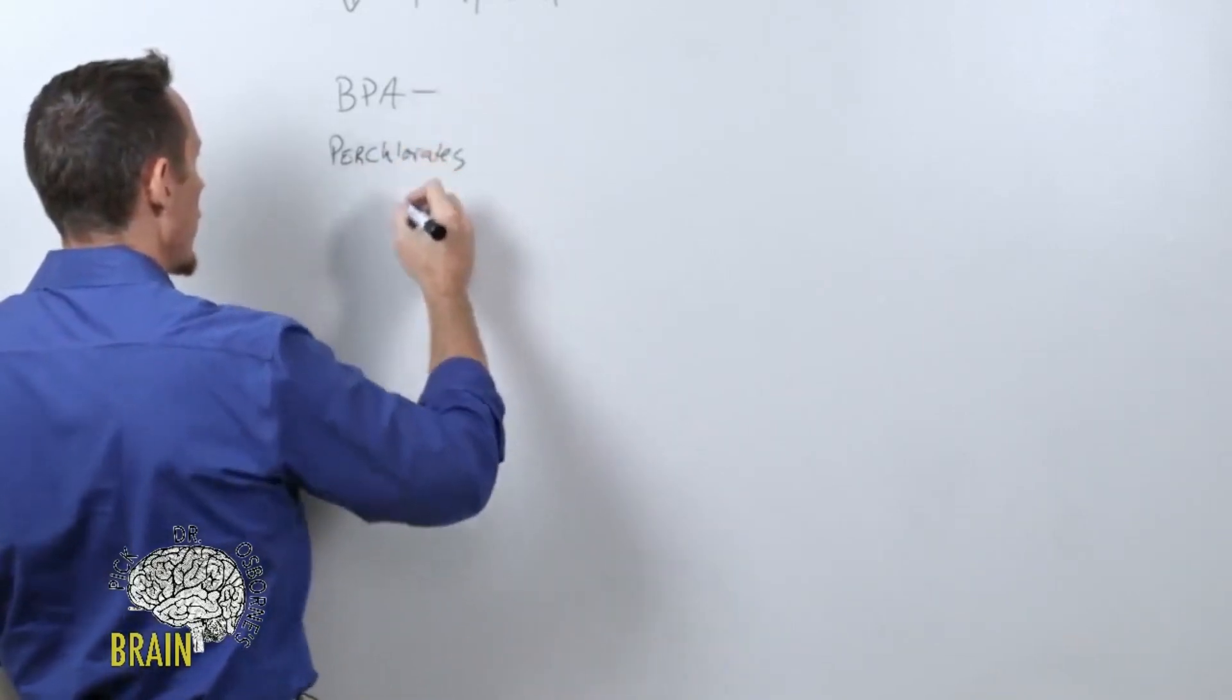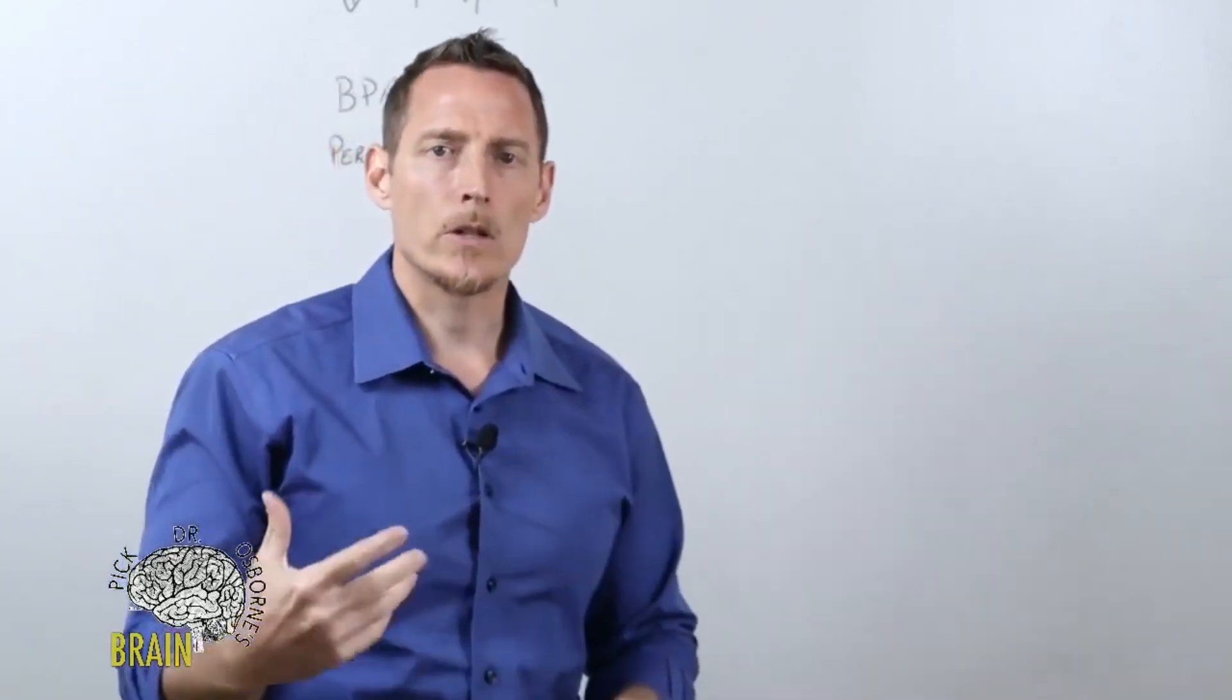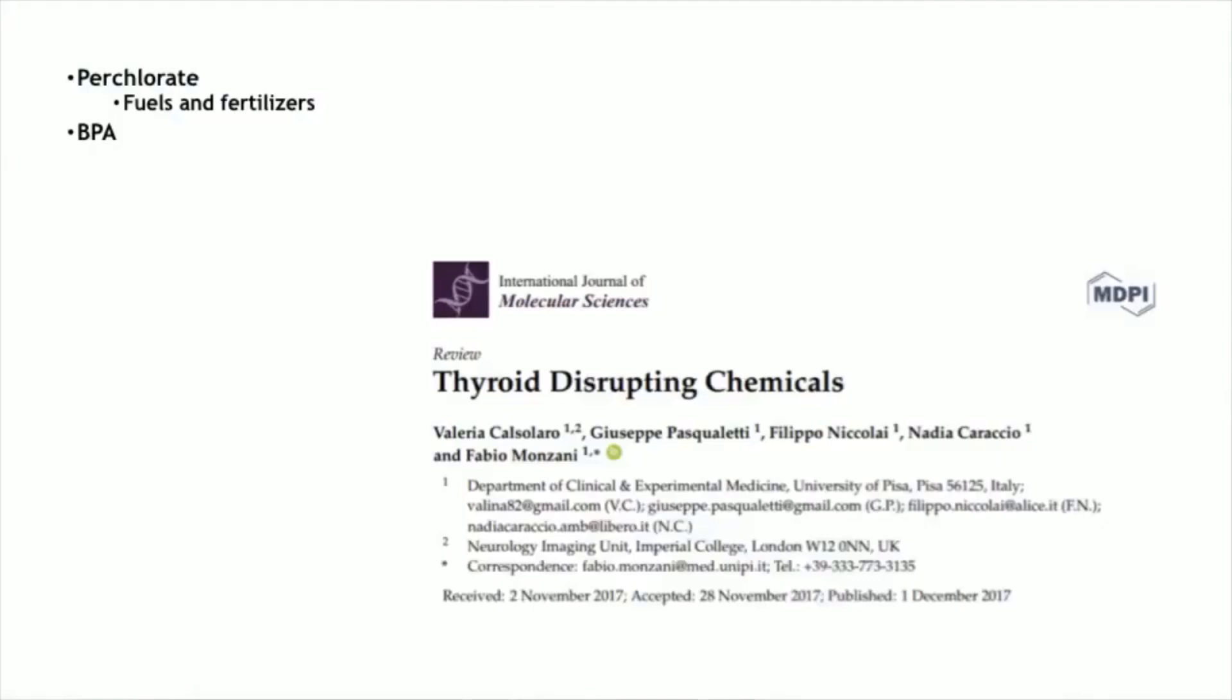What you're looking at here in this research study is a summary. There are two chemicals: BPA and perchlorate compounds, oftentimes known to create endocrine dysfunction. They're thyroid-disrupting chemicals, and this has been shown in a number of different studies.